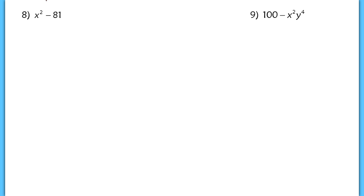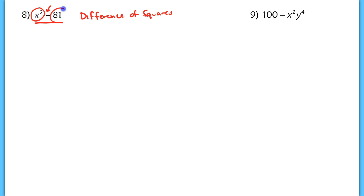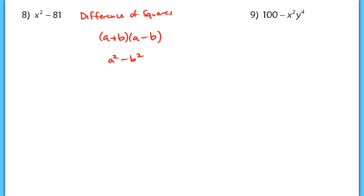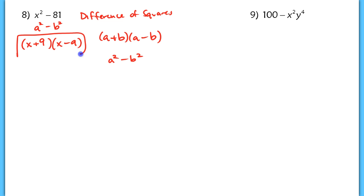Next is number 8. When you look at this binomial, there's no GCF, so some people might say it's not factorable. But you need to recognize this as a difference of squares — the special product from the front of our notes. It's a difference because we're subtracting, and both terms are perfect squares. Remember: a squared minus b squared factors to (a plus b)(a minus b). Here, a is x and b is 9. So x squared minus 81 factors to (x plus 9)(x minus 9).